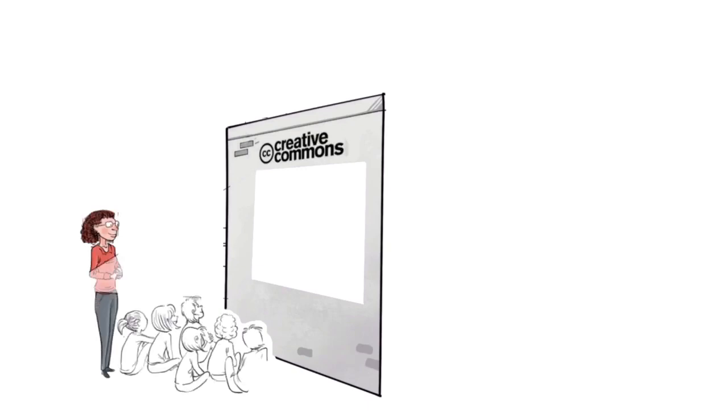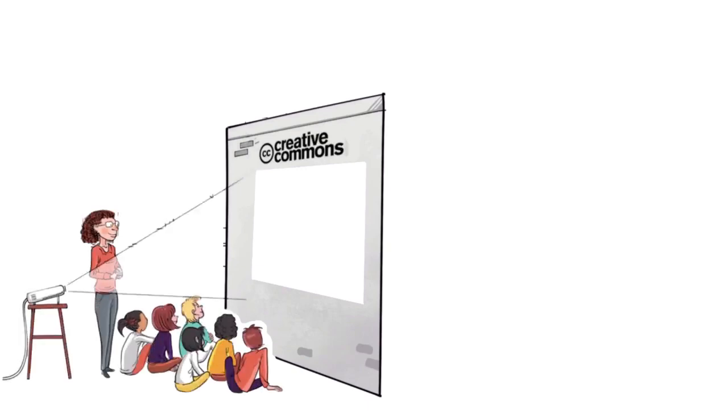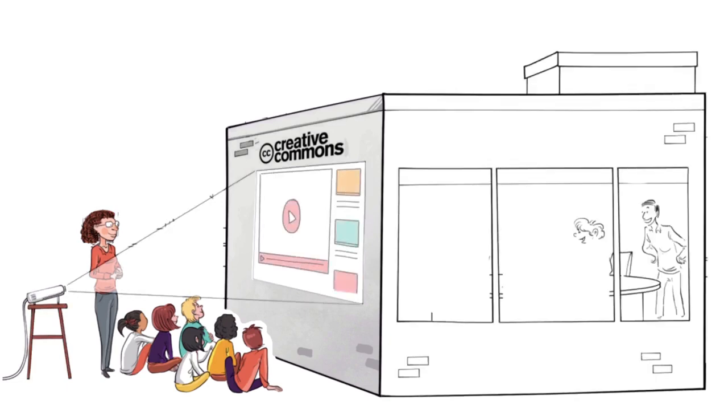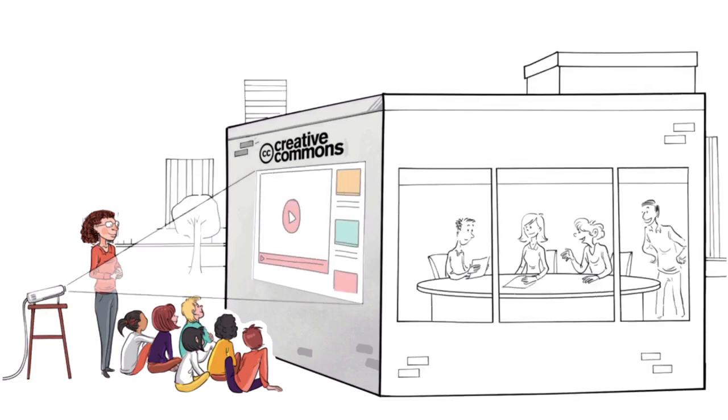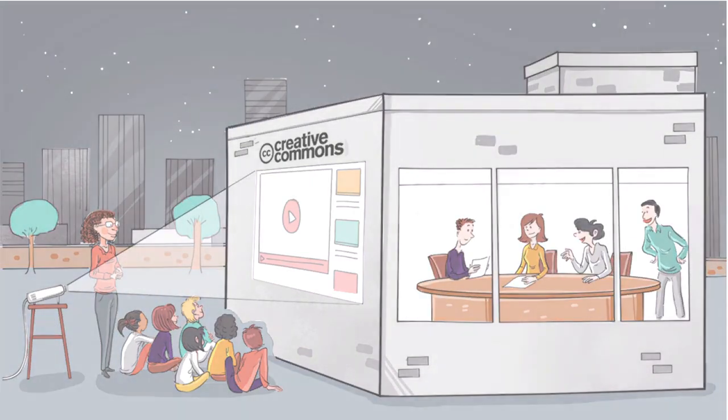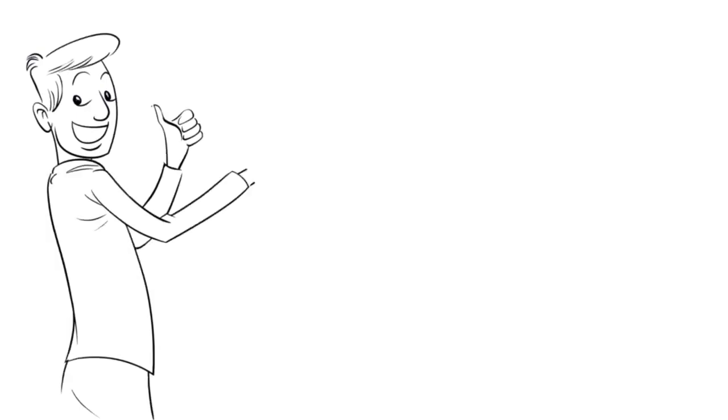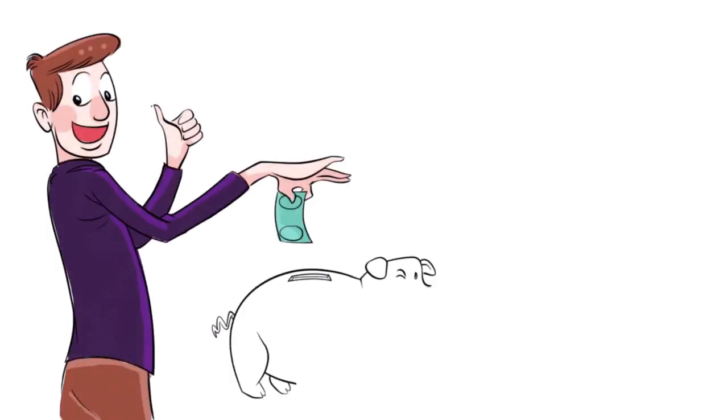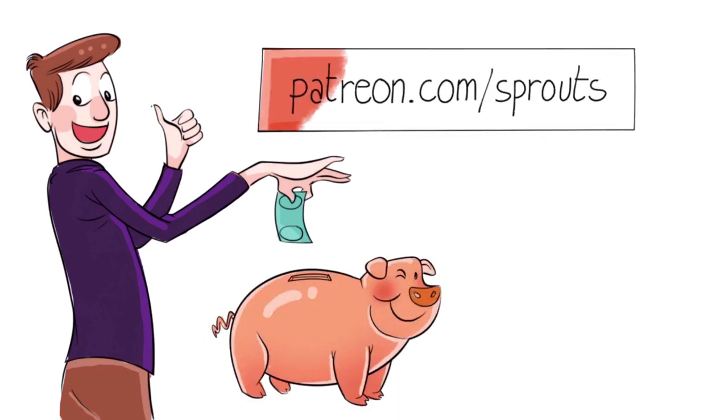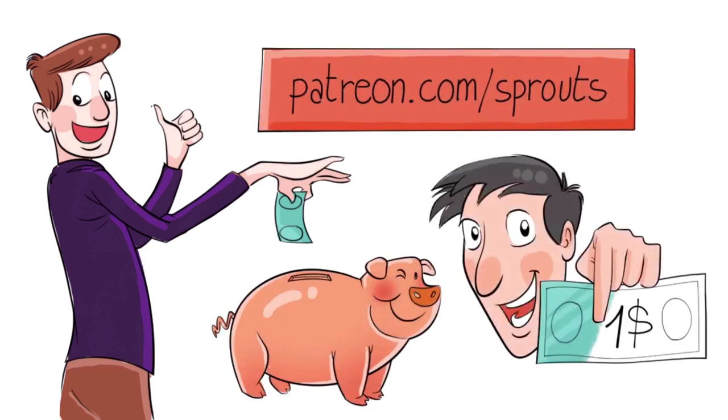Sprouts videos are published under the Creative Commons license. That means our videos are free and anyone can download, edit, and play them for personal use. And public schools, governments, and nonprofit organizations can also use them for training, online courses, or designing new curriculums. To help us stay independent and support our work, you can join our patrons and contribute. Just visit patreon.com slash sprouts. Even one dollar can make a difference.